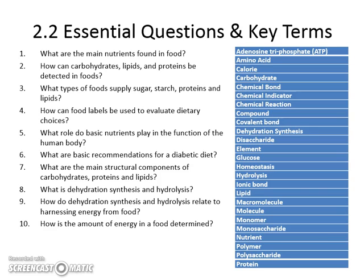These are the essential questions you will need to know by the end of activity 2.2.2 in order to do well on the test: What are the main nutrients found in food? How do macromolecules get detected in foods? What types of foods — especially sugar, starch, proteins, and lipids — contain them? How can food labels be used to evaluate dietary choices? What roles do these nutrients play in your body, and what are the basic recommendations for diabetics?